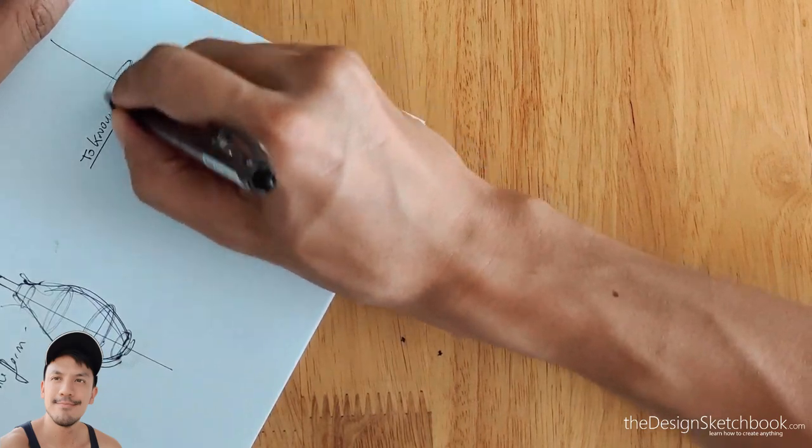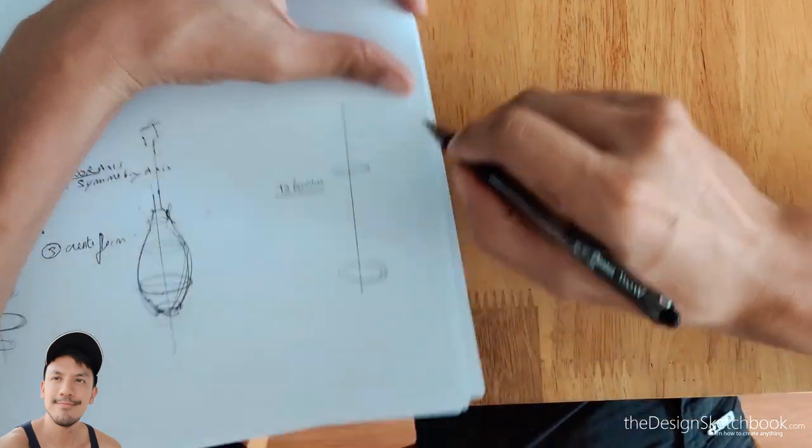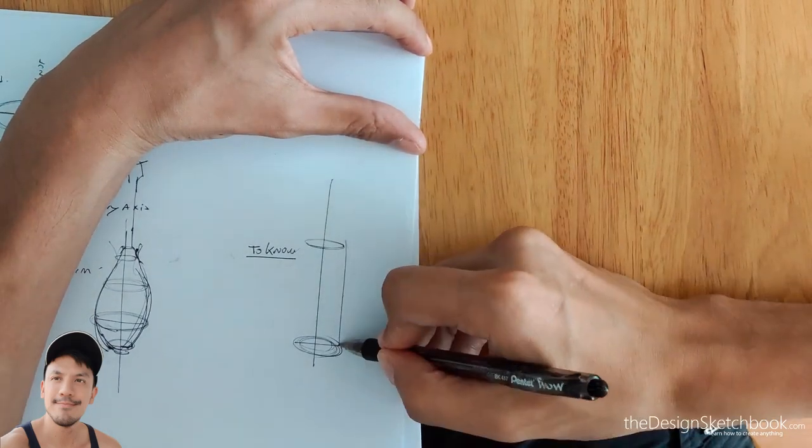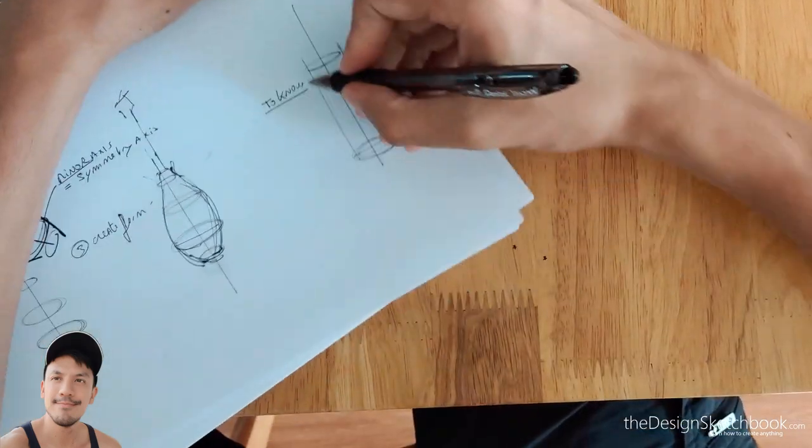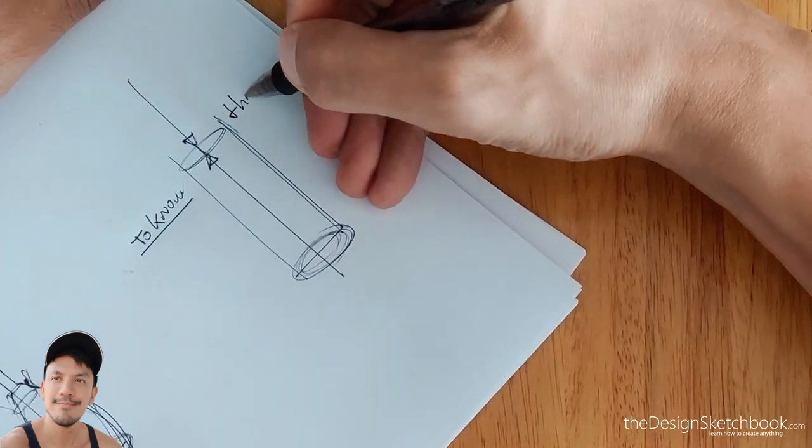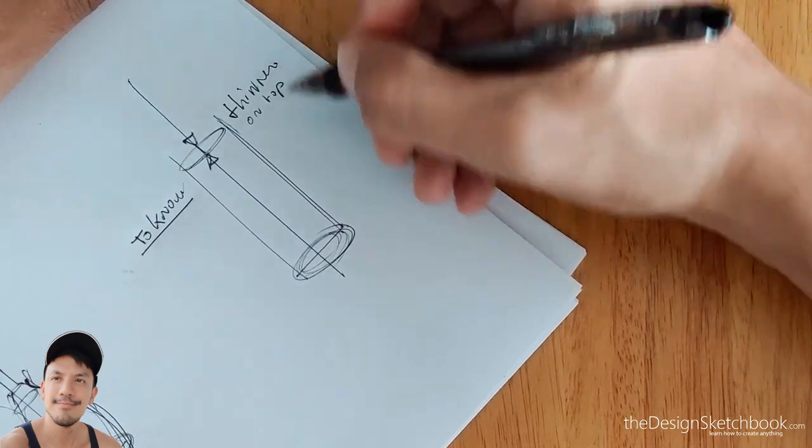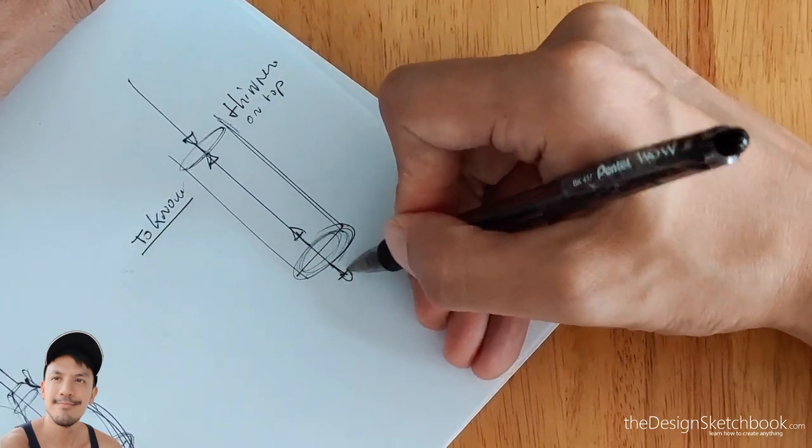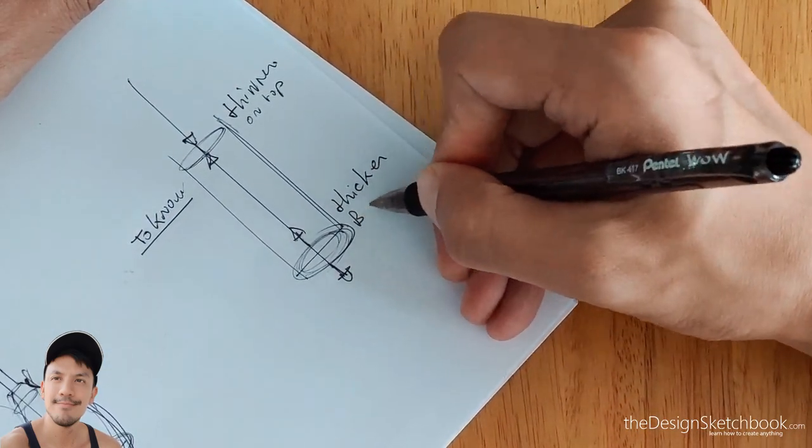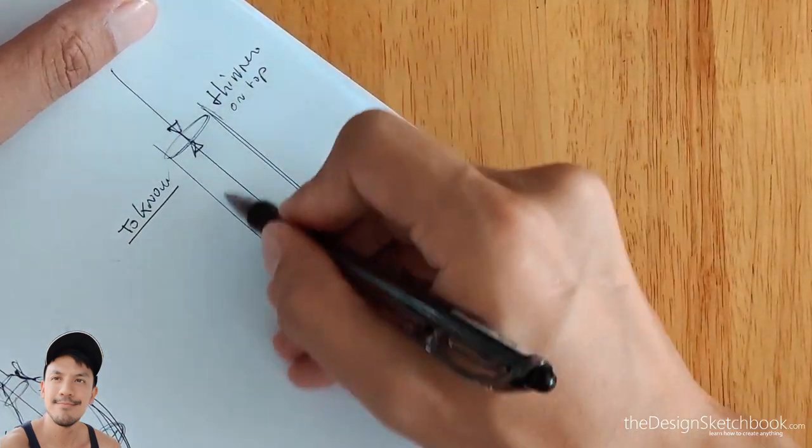So basically, the top ellipse of the cylinders and the bottom ellipse of the cylinders, they have something particular. Can you see? The top one is thinner and the bottom one is thicker. That's something that is really important when you're going to draw cylinders or cylinder-based products. It's thinner on top, thicker below, and whatever is in between is also in between in terms of thickness.